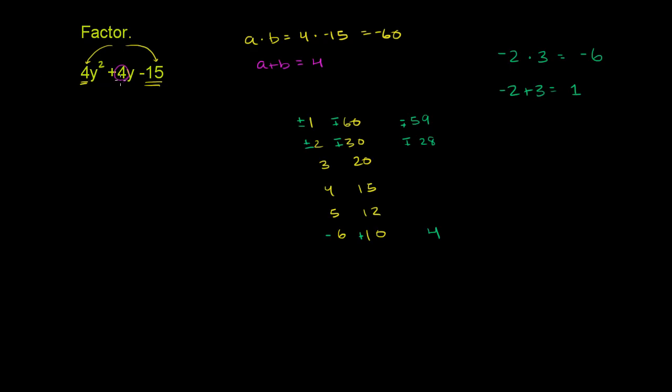So what we could do is break up the 4y as the sum of a negative 6y and a 10y. So let's do that. So 4y I'm going to write as negative 6y plus 10y. If you add these two together, clearly you get 4y, and then we have the rest of the problem here. We have the 4y squared minus 15. Now we're ready to factor by grouping.